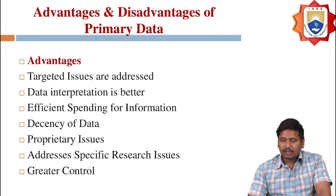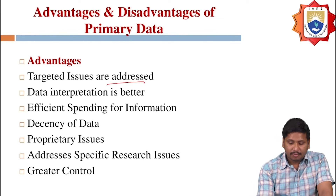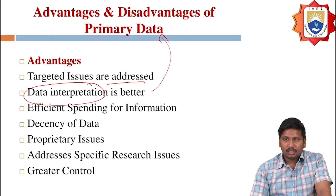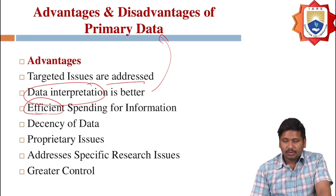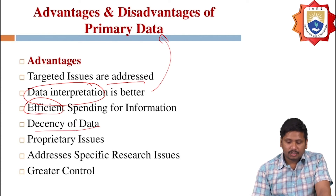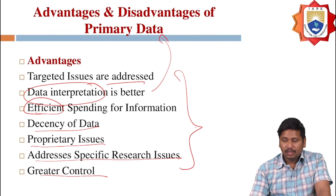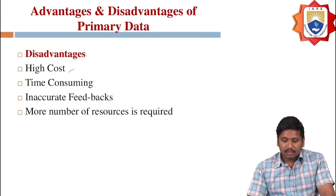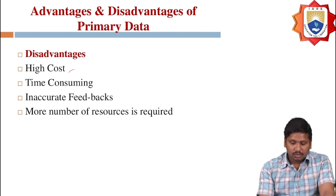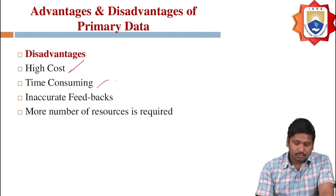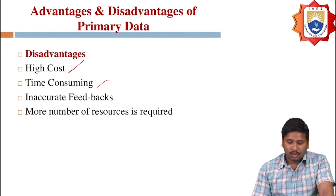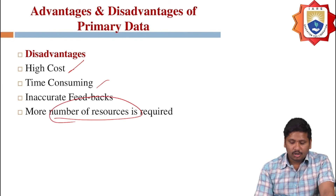The advantages of primary data include: targeted issues are addressed, data interpretation is very good, efficient spending on information, proprietary issues are addressed, specific research issues can be targeted, and there is greater control. The disadvantages of primary data include: high cost to acquire, time-consuming process, inaccurate feedback, and more visits or resources required to collect the data.